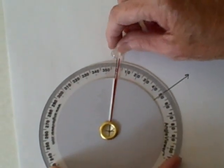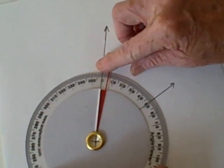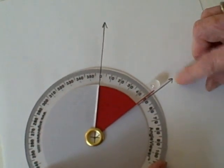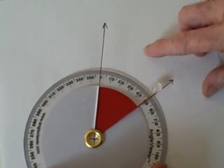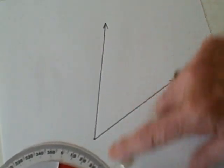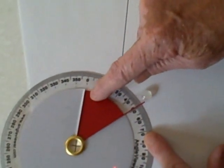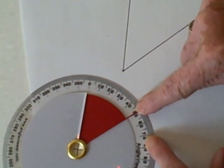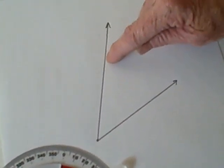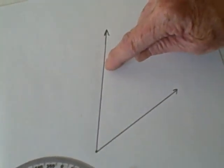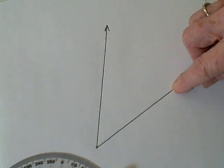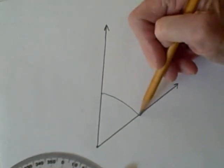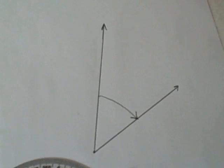Move the dial from the zero degree mark to the other ray. Move it to the side and you can see that this red space between zero degrees and 50 degrees is that space between this ray and this ray. Therefore, this angle measures 50 degrees.